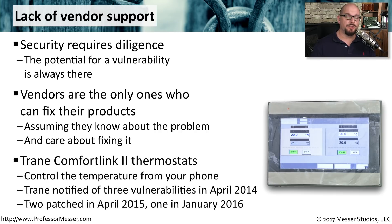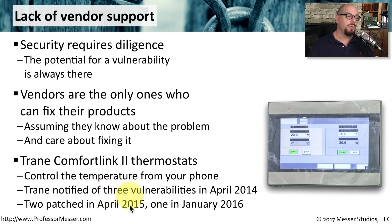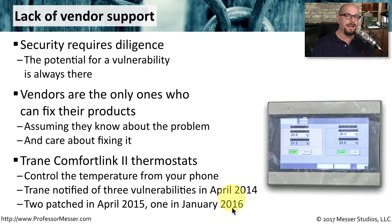We have a renewed concern with vendor support because of all the Internet of Things devices connected to our networks. A good example is a thermostat from Trane, the Comfort Link 2. You could control and monitor the temperature in your home from your phone. Trane was notified of three vulnerabilities in April of 2014. It took them until April of 2015 to patch two of them, and until January of 2016 to patch the third. This is where vendor support becomes very important — to be able to provide timely updates and security patches.